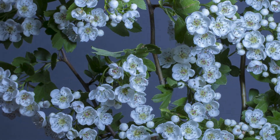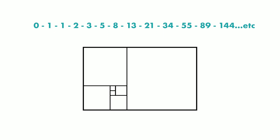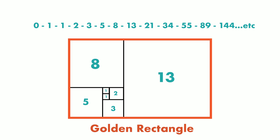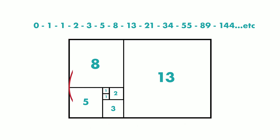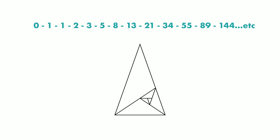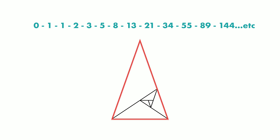This Fibonacci sequence or pattern can also be drawn using rectangles. This rectangular representation is the first geometric interpretation of the Fibonacci sequence. And this rectangle is what we call the golden rectangle. When we connect the points in a certain way with these arcs, one after another, we get what we call the golden spiral. We can also represent it geometrically using triangles, not only rectangles, and this final triangle is what we call the golden triangle.